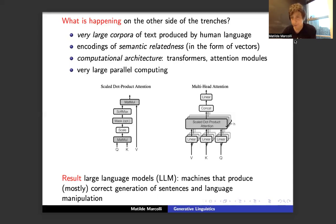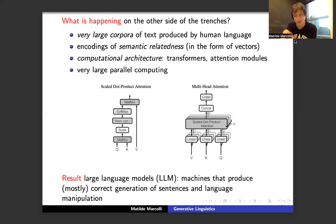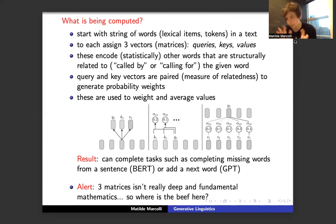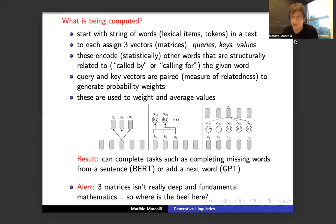Large language models are machines that produce correct — or mostly correct — autonomous generation of sentences and language manipulations, which is a very impressive technological development. Looking more closely at what is being computed: you start with a string of words and assign to each of them three matrices — in the context of multi-head attention — called queries, keys, and values. These encode in a statistical sense other words that are structurally related to the given word.